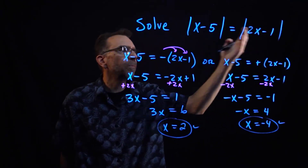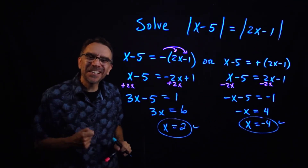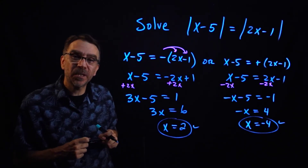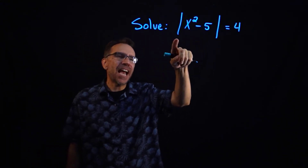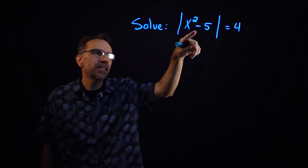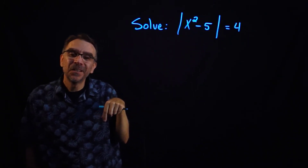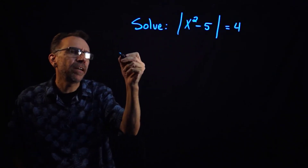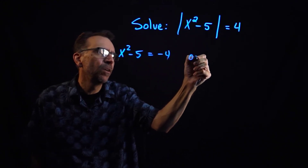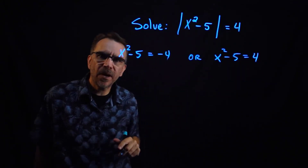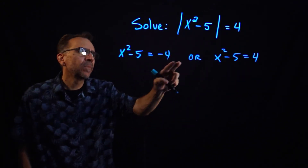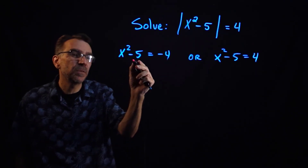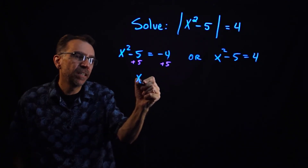Those are two solutions for absolute value equals absolute value. As a bonus, let's look at one more type: absolute value of x squared minus 5 equals 4. The difference here is that we have a quadratic inside the absolute value. The steps are the same — we set x squared minus 5 equal to negative 4 or positive 4. For the first branch, adding 5 to both sides gives x squared equals 1.